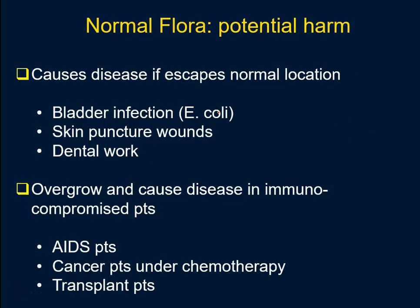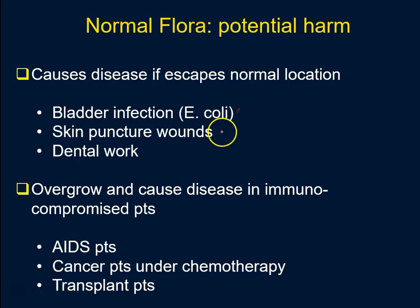While I've highlighted the benefits of normal flora, there's always potential harm. Normal flora is normal if it stays in its location and in a normal individual. If one thing changes, that normal flora has the potential to cause harm. For example, if the flora within the gut escapes and invades the bladder through the urethra — E. coli is probably the most common species causing bladder infection, and E. coli also happens to be one of the major species within the gut. Outside of the gut, it can cause an infection.